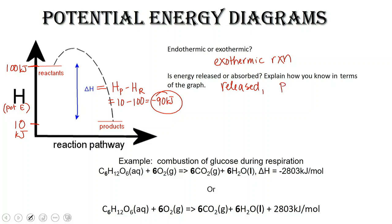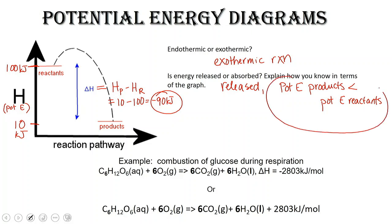The potential energy of our products is less than the potential energy of our reactants. This means that our reactants have lower bond dissociation energy than our products. These reactants really want to react because they have high potential energy, whereas our products have low potential energy. And once they become products, they're not likely to revert into those reactants. So for an exothermic reaction, the potential energy of the products is less than the potential energy of the reactants.